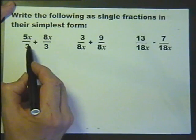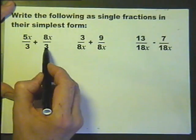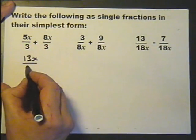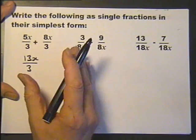So we've got 5x over 3 plus 8x over 3, which will give you 13x over 3. Nothing cancels, nothing simplifies, that's it.